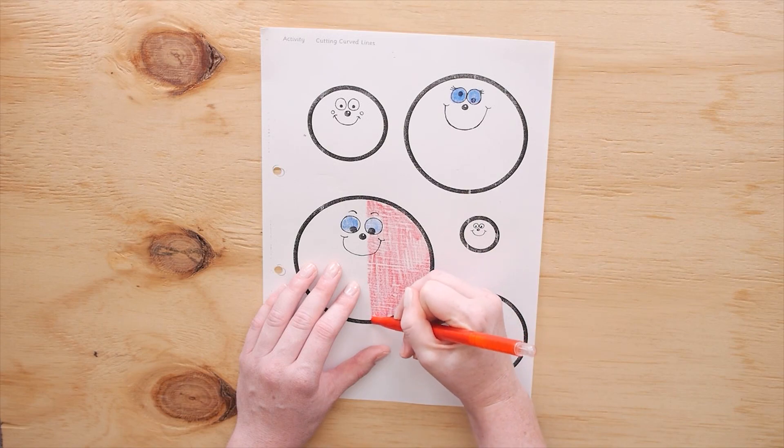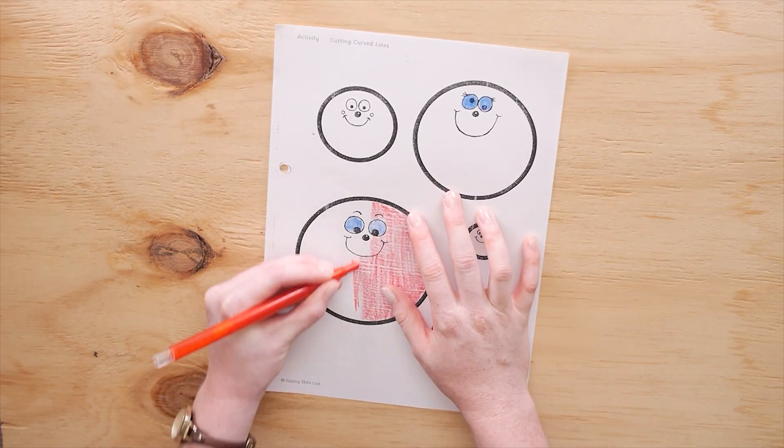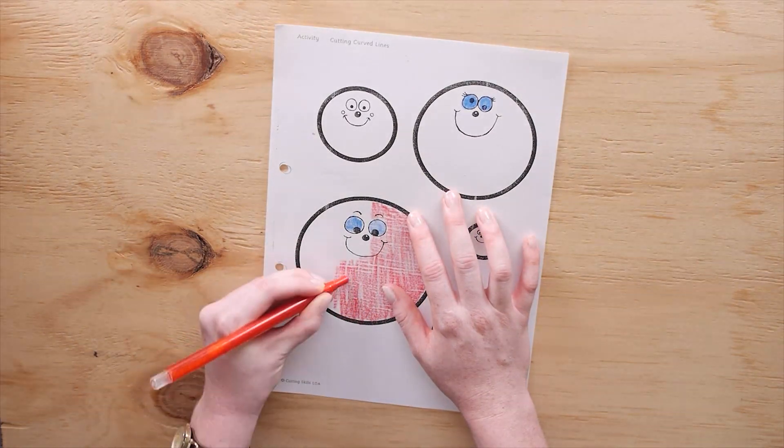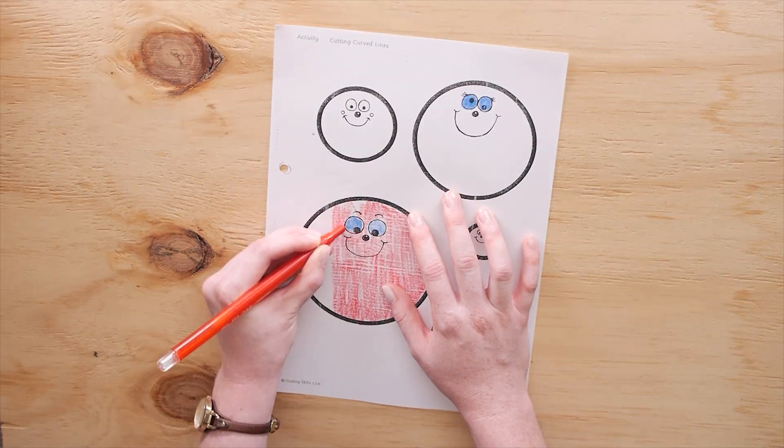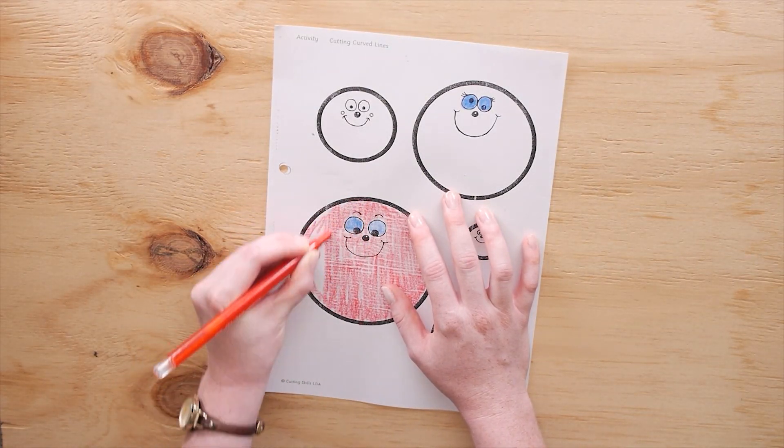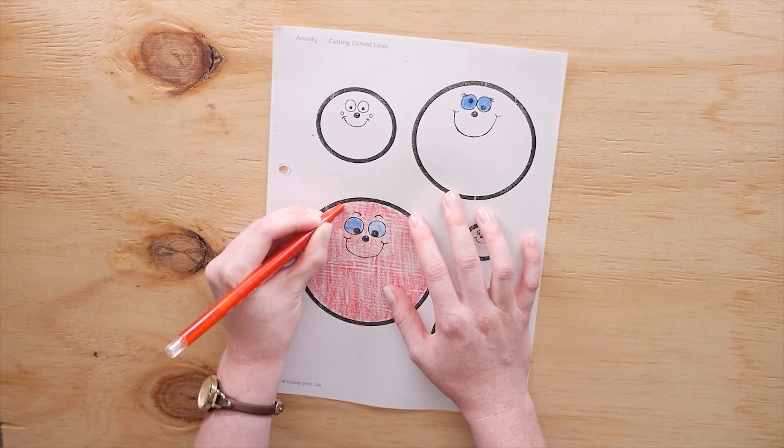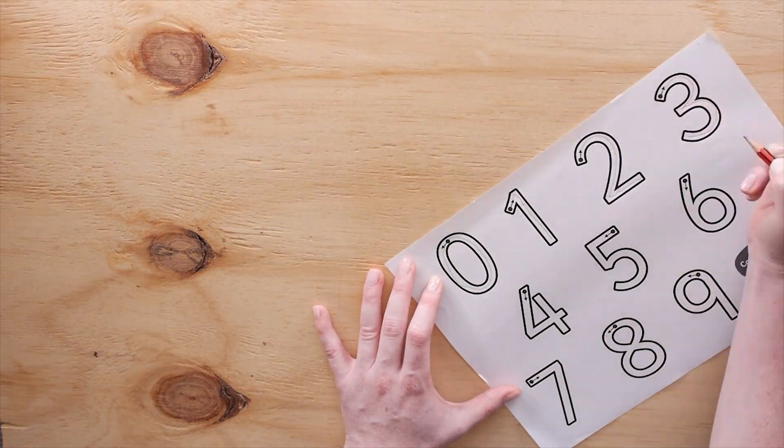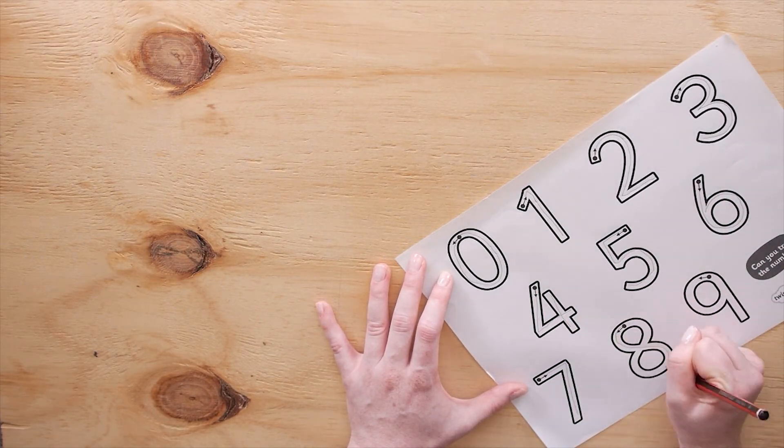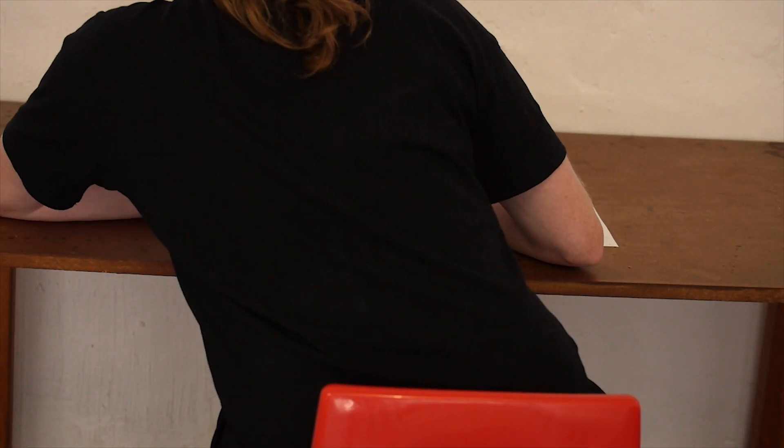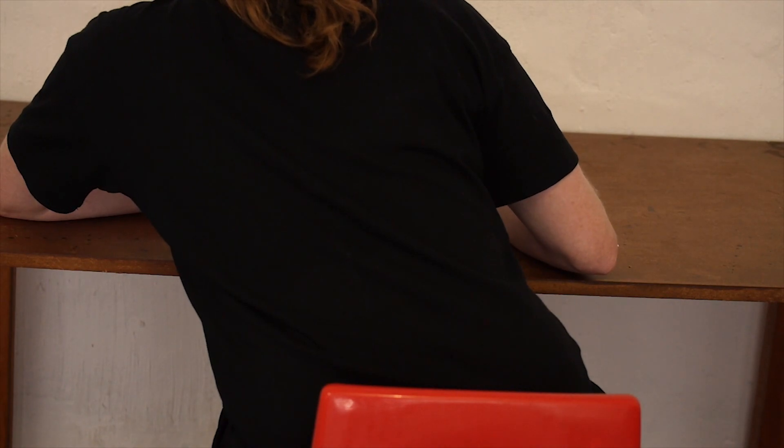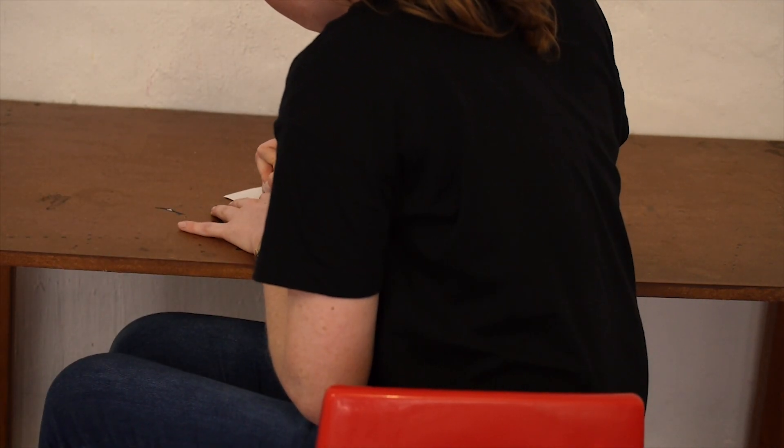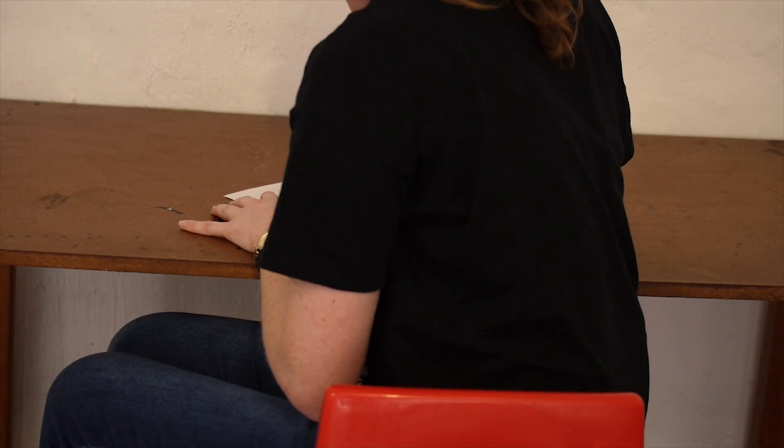Some children with delayed midline crossing skills may have established a dominant hand but display some compensatory mechanisms during tabletop activities that influence their writing skills. They might turn the paper and reposition it to avoid working across the midline or shift their body all the way to one side so that the dominant hand does not have to reach over to the other side.